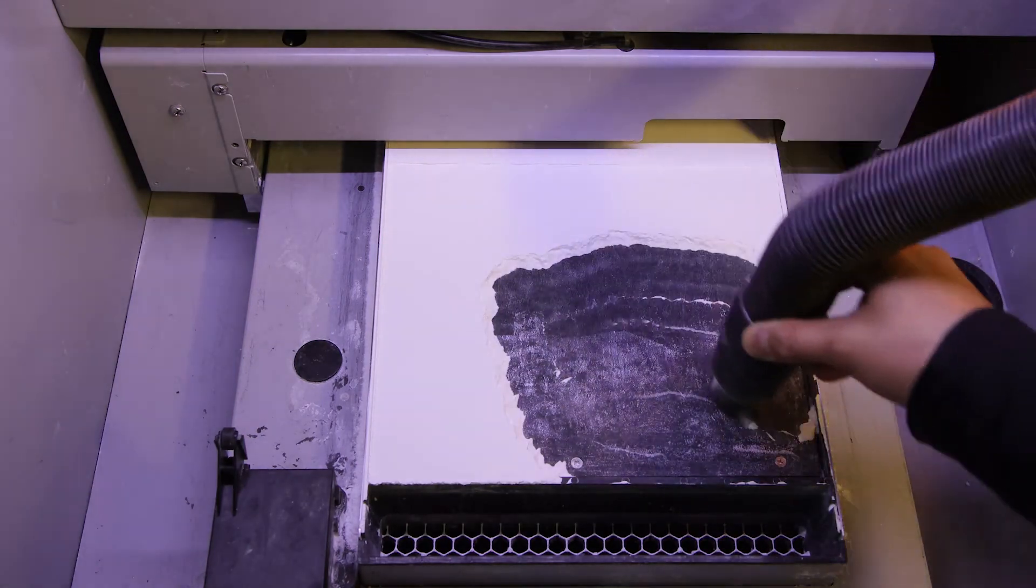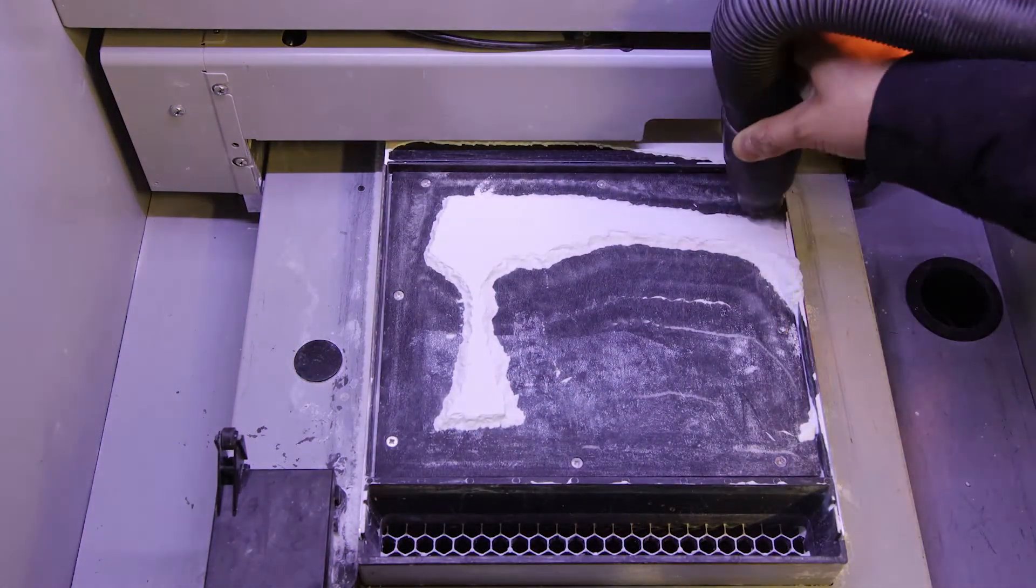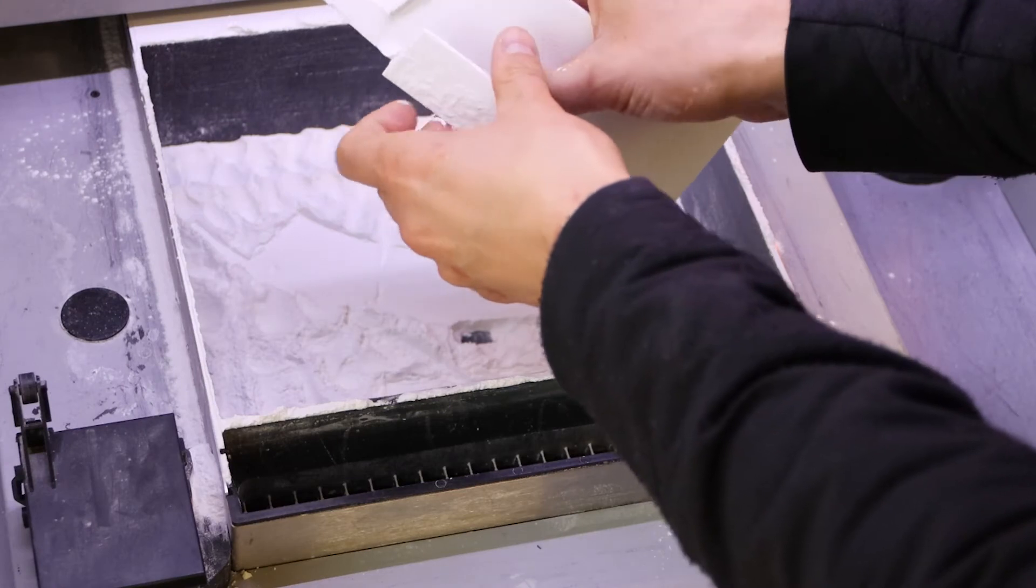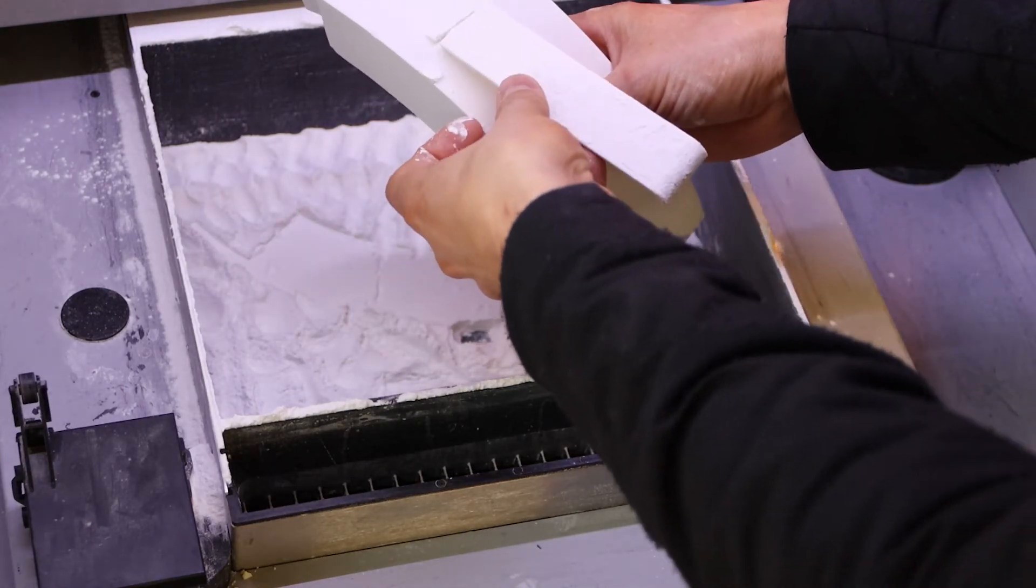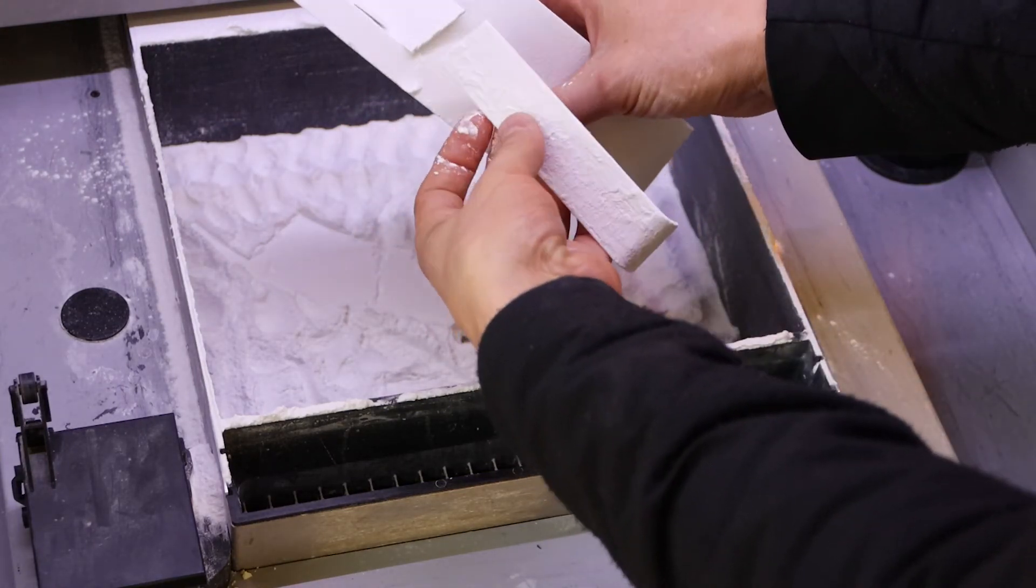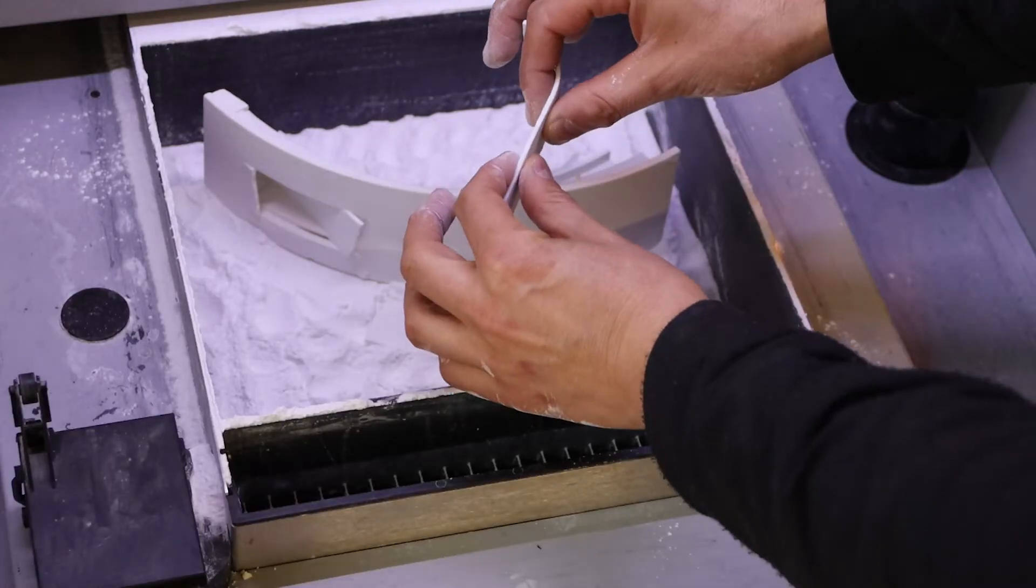The big advantage of this process is that there are no supports that need to be cut away from the model. However, the objects are very fragile. Long thin sections are almost impossible to remove without breaking.